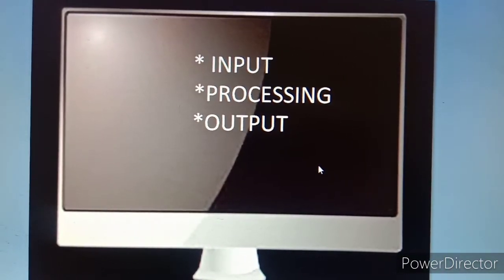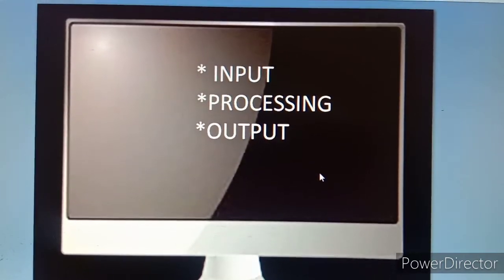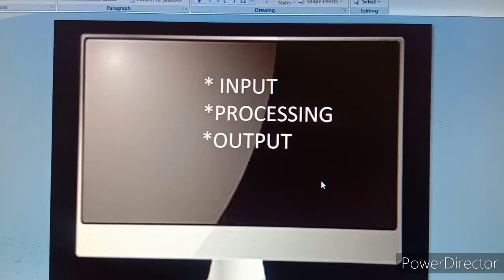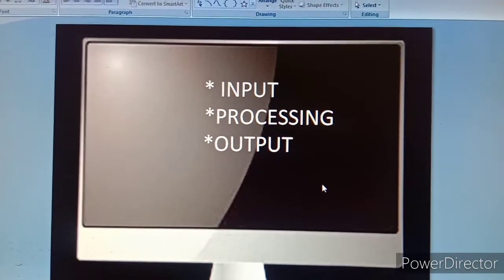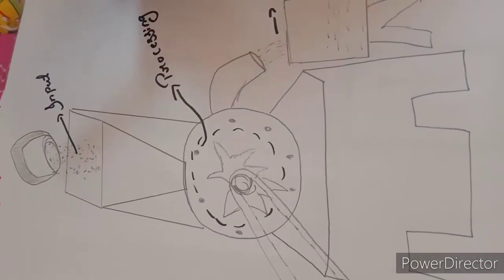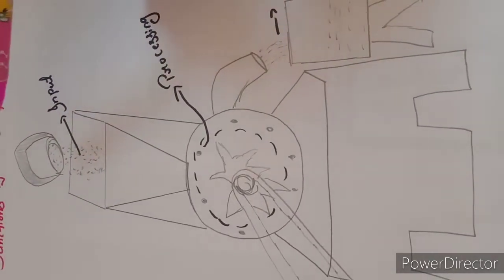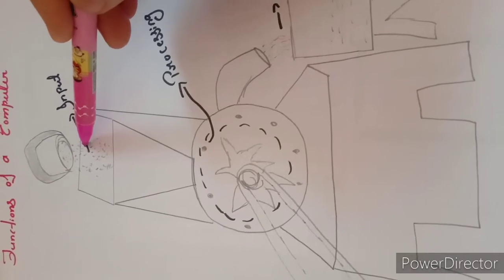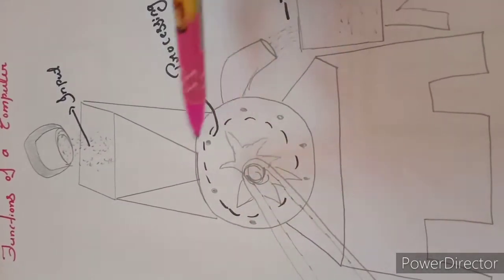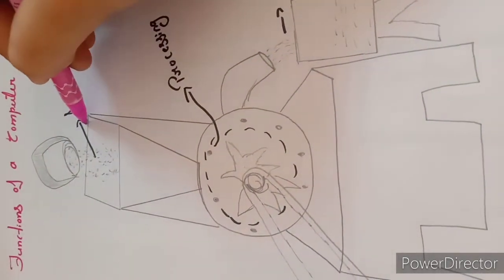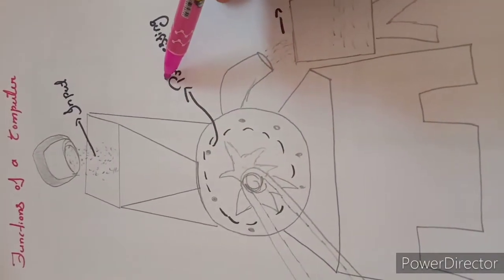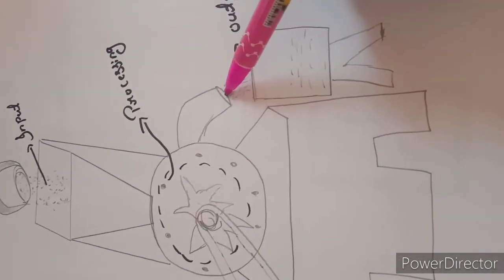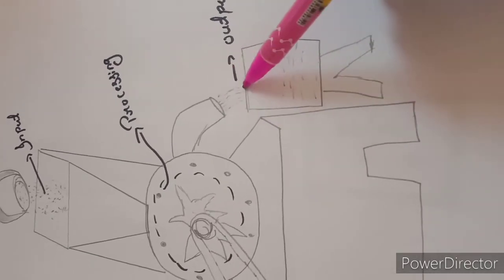Now let us understand what these terms mean. Let us take the example of a floor mill. Food grains are put into the big funnel at the top, and they are slowly crushed in the grinder. The floor comes out of the opening at the bottom. This is output.